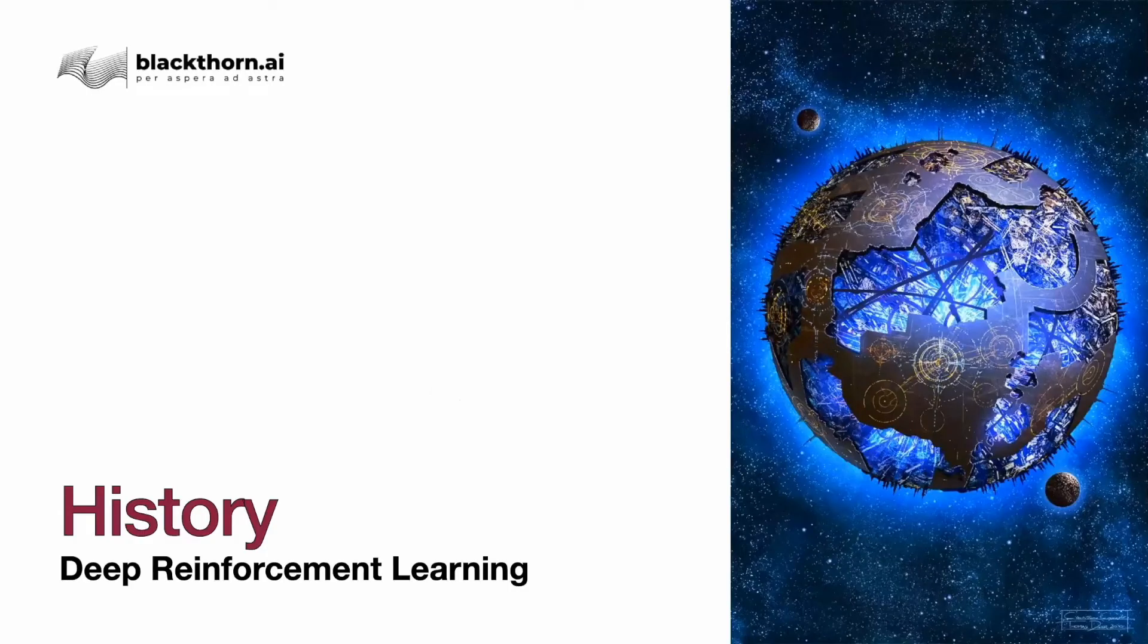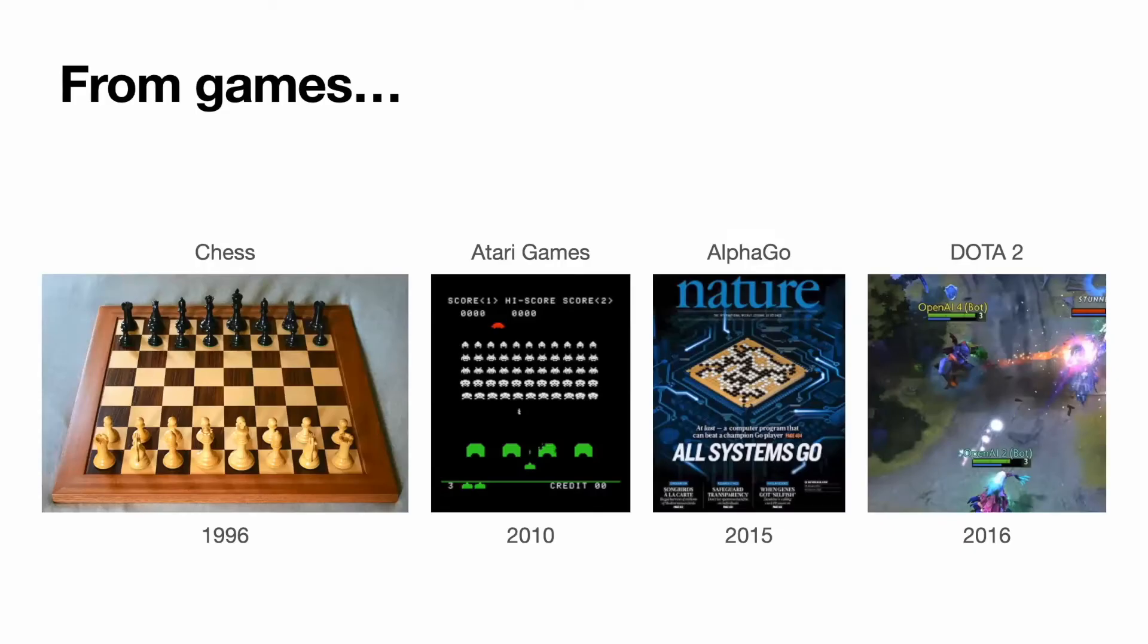We will briefly talk about history. Reinforcement learning was invented more than 50 years ago. In 1996, it was successfully applied to chess. And after that, there was a number of successful and groundbreaking achievements of deep reinforcement learning.